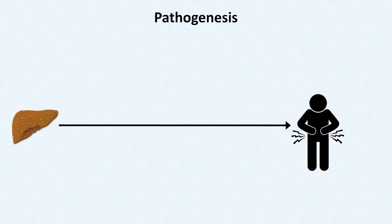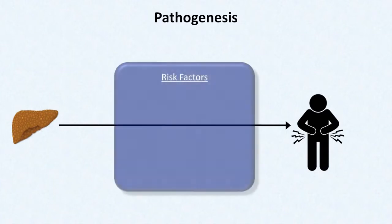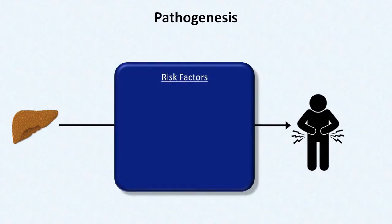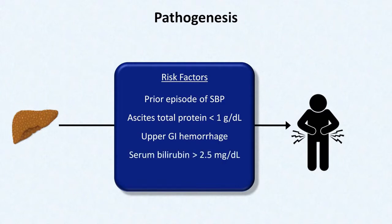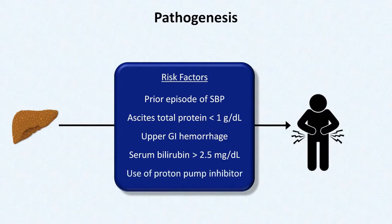In addition to this pathogenesis, there are also several well-established risk factors for SBP, some of which you may be able to guess. They are: a prior episode of SBP, a total protein in the ascites fluid of under 1 gram per deciliter, active upper GI hemorrhage — not necessarily limited to a variceal bleed — serum bilirubin above 2.5 mg per deciliter, which is probably just a marker of severity of cirrhosis, and use of a proton pump inhibitor.